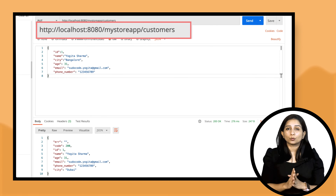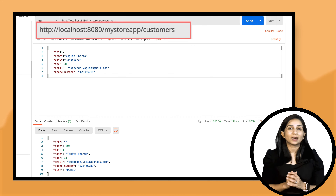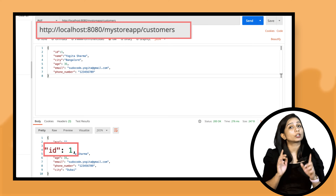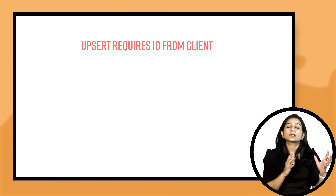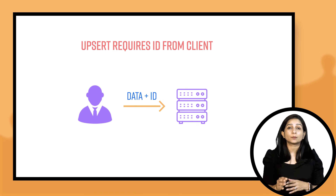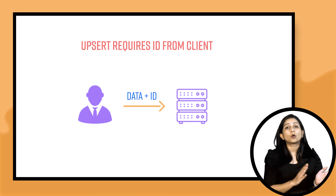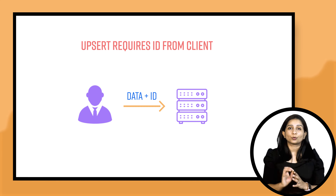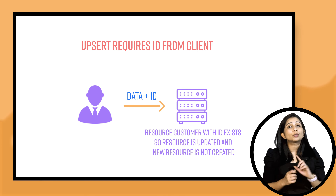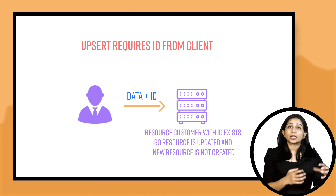This is the URI we will be using to update the customer resource. In the request body, we send customer ID as 1 along with the other attributes of the customer. The server sees the request and realizes that the customer with ID 1 already exists. In this case, the server is going to update the whole customer resource with the attributes sent in the PUT request and return the whole object with response code 200. Since the resource already existed, a new resource has not been created — the same resource has been updated.